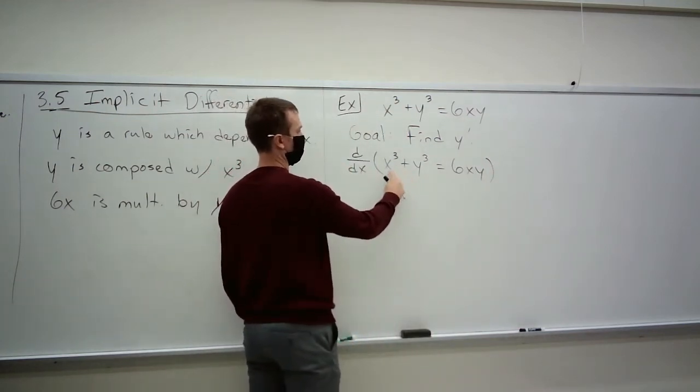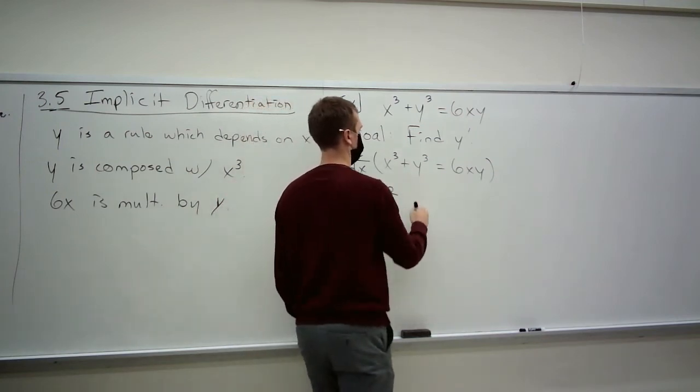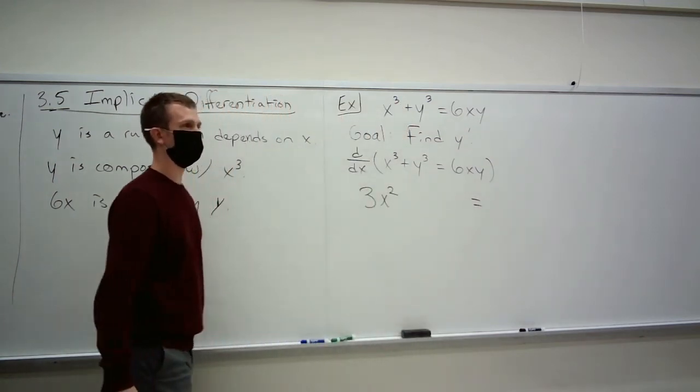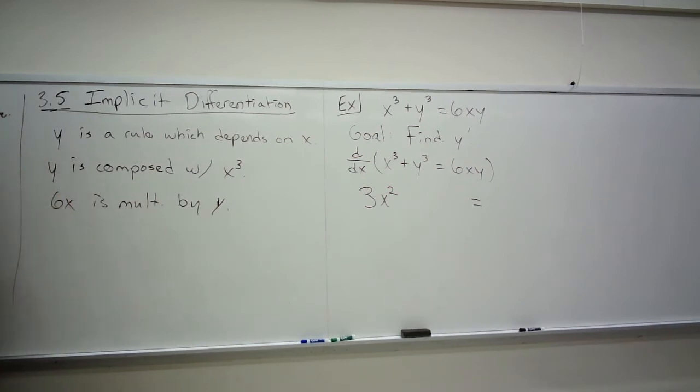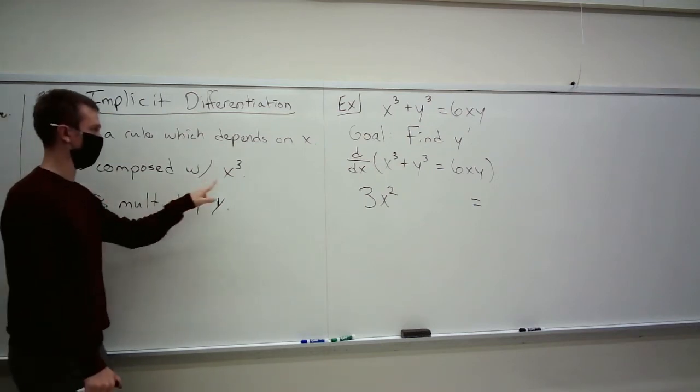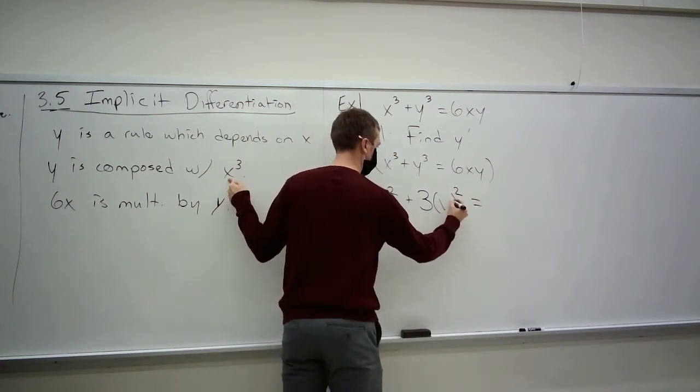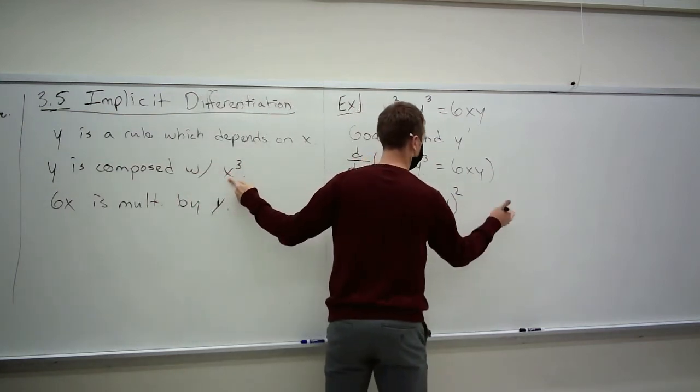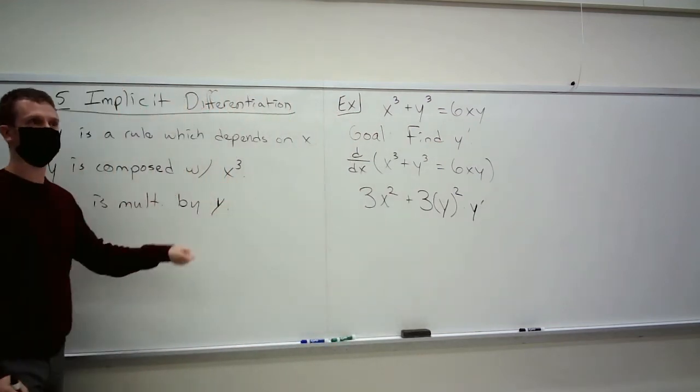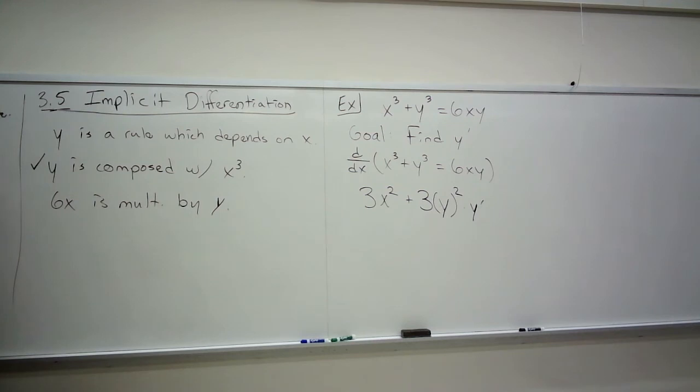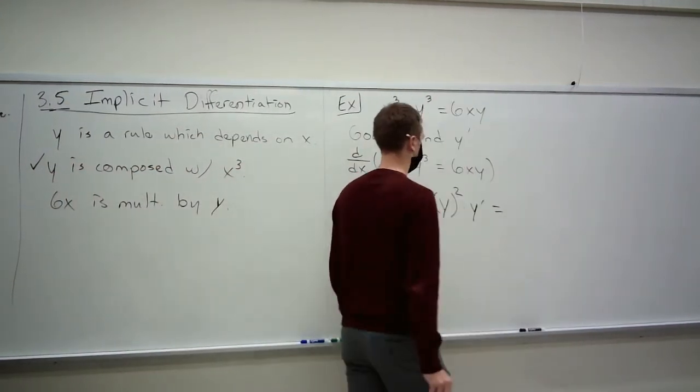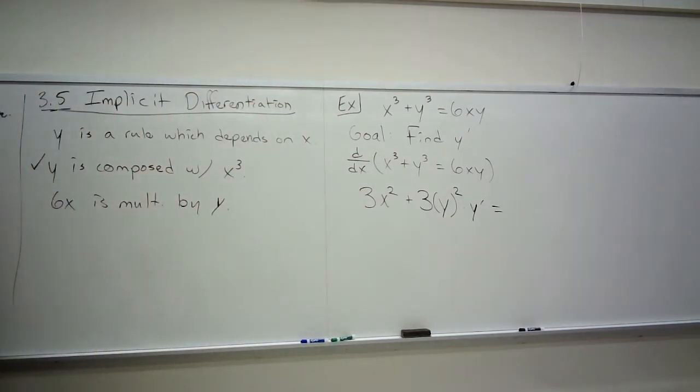So we'll differentiate both sides. This is a very common first step. Differentiating the left, well we have a sum, so we can just take the derivatives of the pieces. So this is 3x squared. I'm going to leave this for a second. On the right, oh boy, I'm going to leave that too. And I'm going to come to these. What's the derivative of y cubed? Well that's a composition. It's the derivative of the outer function, 3 something squared, composed with the original thing that was plugged in, times the derivative of what was inside.